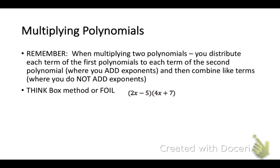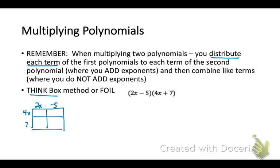Sometimes you're going to multiply a binomial — that's two terms — times another binomial. When you multiply those, you distribute each term in the first polynomial to each term in the second. One special method is the box method. Draw a box and place each of your terms; if it's subtraction or negative, the sign goes with the term. Multiply what is above each inner box: the first term is 8x squared, then negative 20x, then 14x, and negative 35. The 14x and negative 20x are alike and can be combined, giving 8x squared minus 6x minus 35.